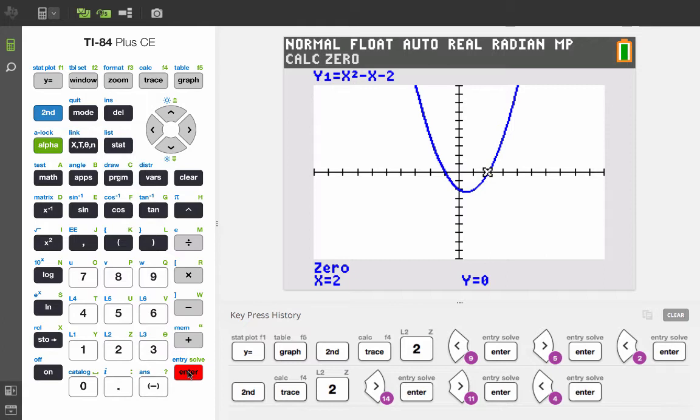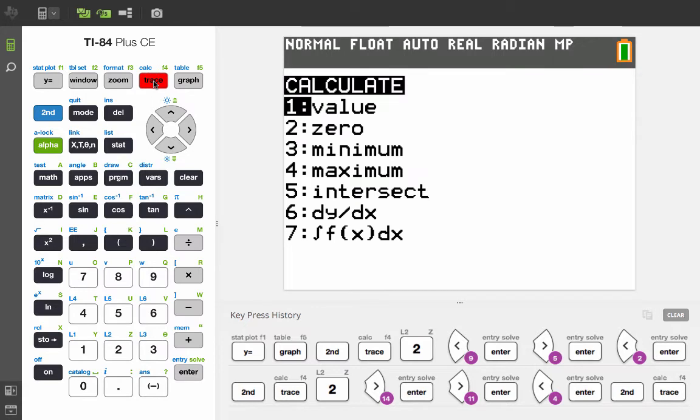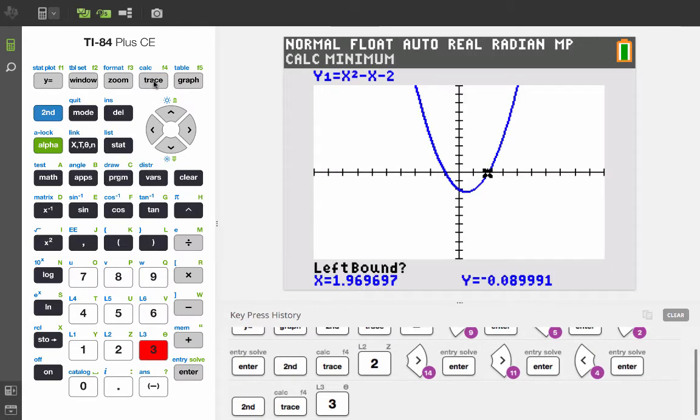Now, let's find the minimum point, which is also the vertex. For that, we'll again go into second calc, and we'll look for minimum. And since the parabola goes the way it goes, it opens up, the minimum is what we're looking for.